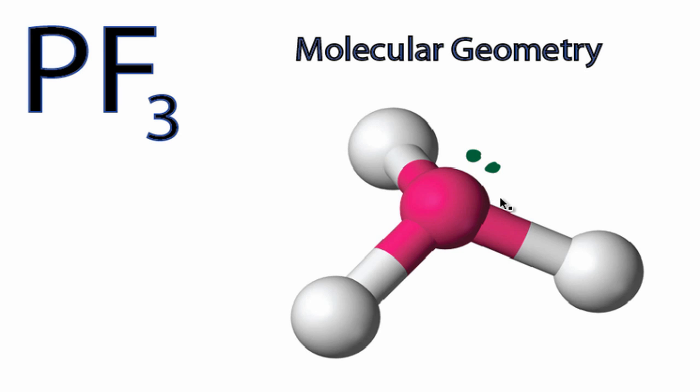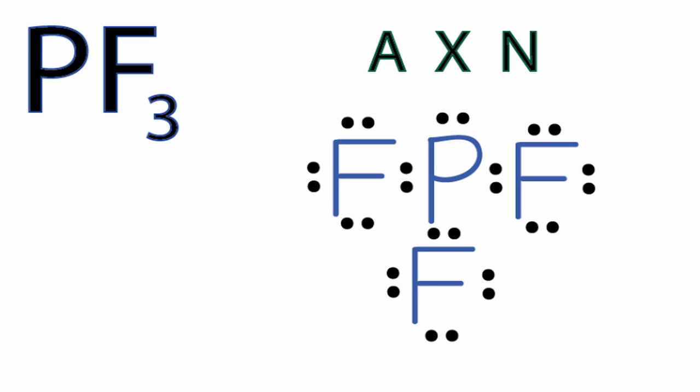We can also use the AXN notation to figure out the molecular geometry. A, that's the central phosphorus. X, that's the number of atoms bonded to the phosphorus, we have three fluorines. And then N, that's the number of non-bonding electrons. We have one pair, so we'll put a one right here.